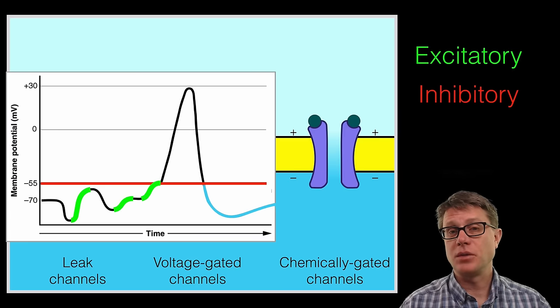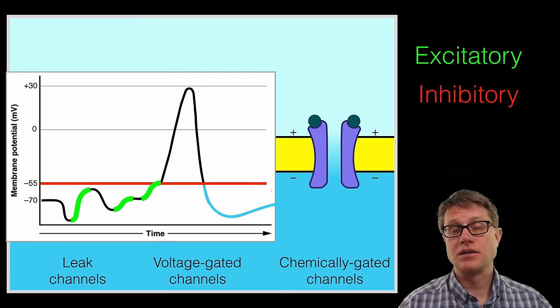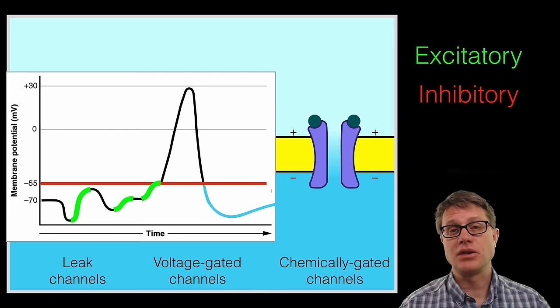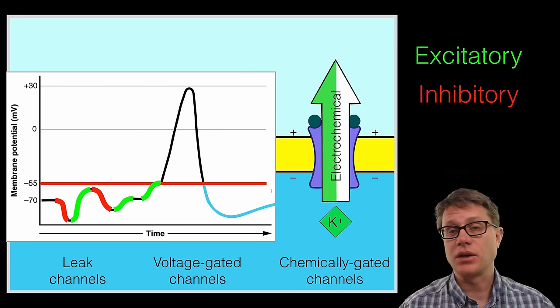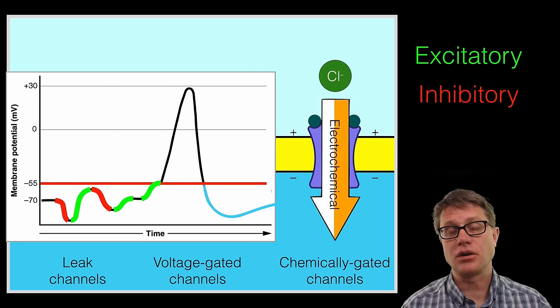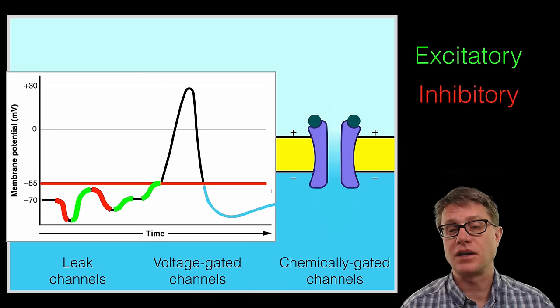Now some of those neurotransmitters may be inhibitory. What they are doing is they are allowing the flow of ions. But these are ions that are moving us away from that action potential. What is a quick way to do that? We could release a bunch of potassium or allow chloride to come into the cell itself.